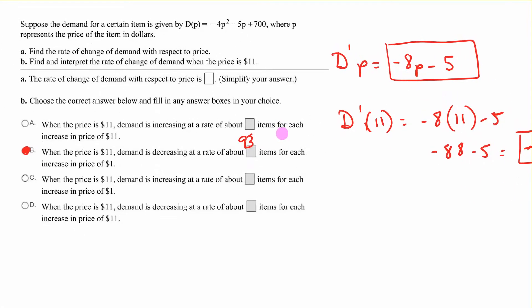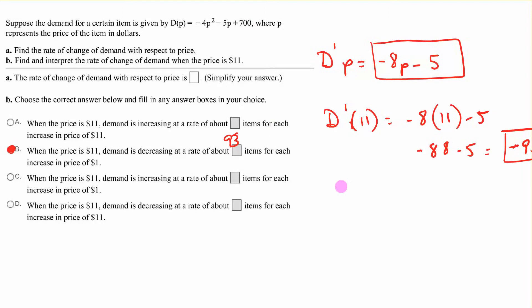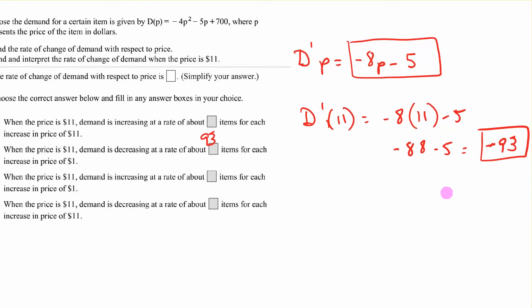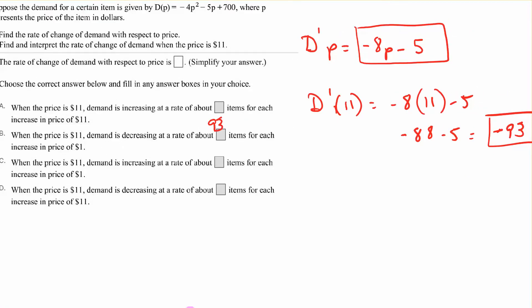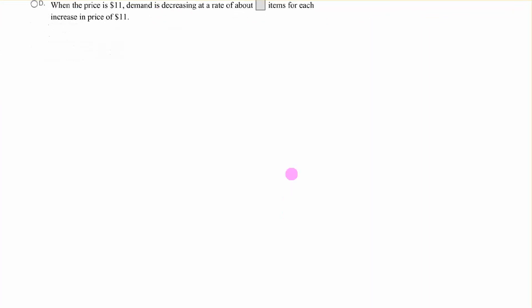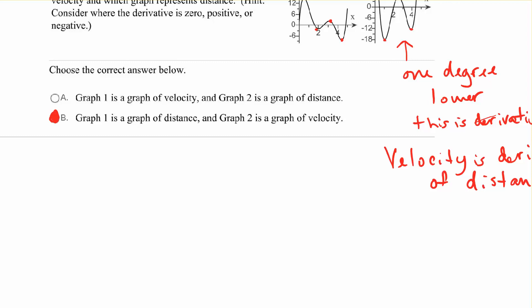Suppose the demand for a certain item is given by this function, where p represents the price in dollars. Find the rate of change of demand with respect to price and interpret it when the price is 11. What it's asking is to find the derivative of the demand. d'(p) = -8p - 5. d'(11): plug in 11 to that and you get -93. The reason we don't put the negative in the box is we've used the word decrease. That takes care of the negative. You don't want to put -93 when you've already used the word decrease. I think that takes care of our problems for section 11.4.